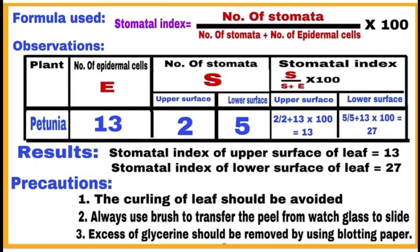Page number 2: write the formula used to calculate the stomatal index, make an observation table, then write results and precautions to be taken. After writing theory, draw diagrams with pencil and label them properly.